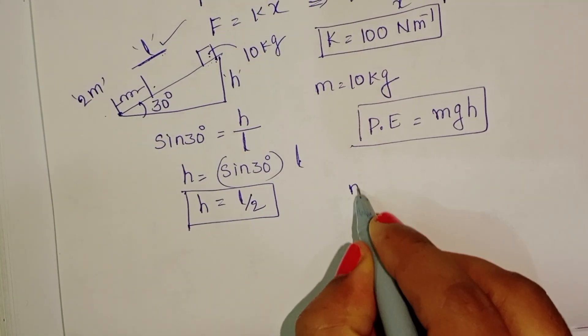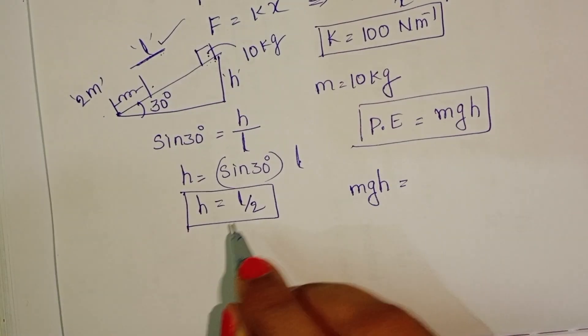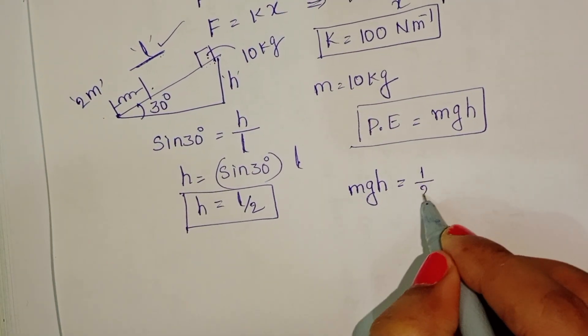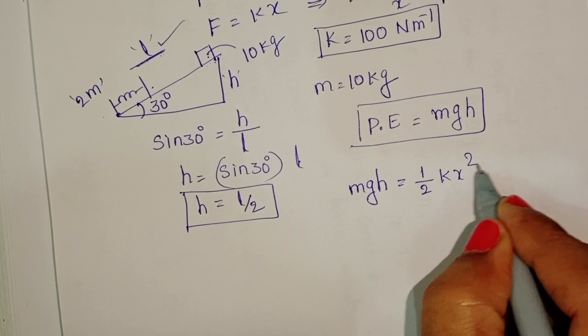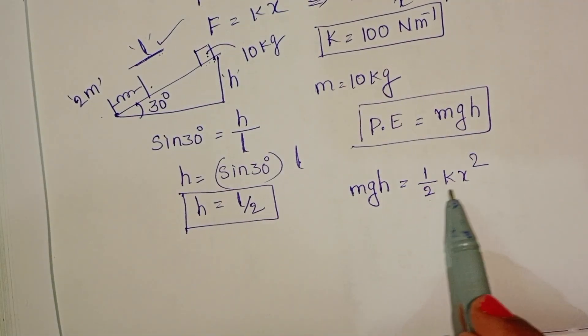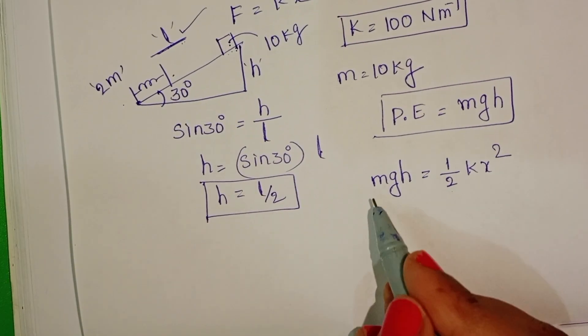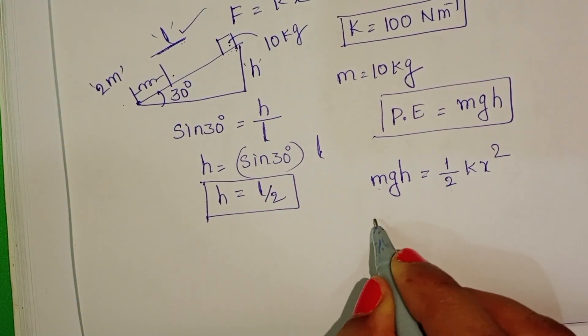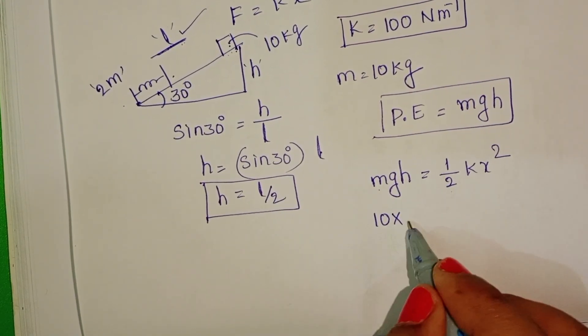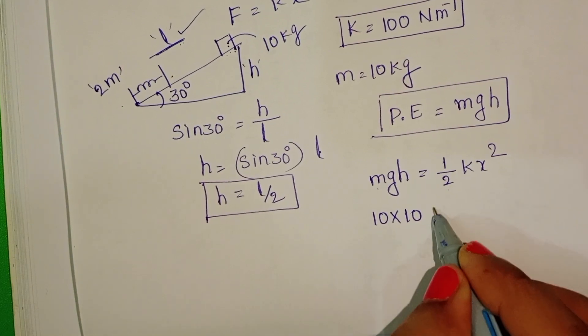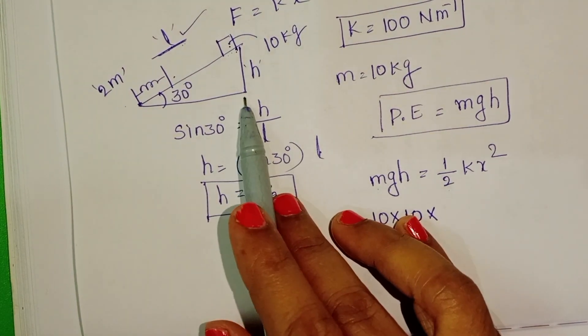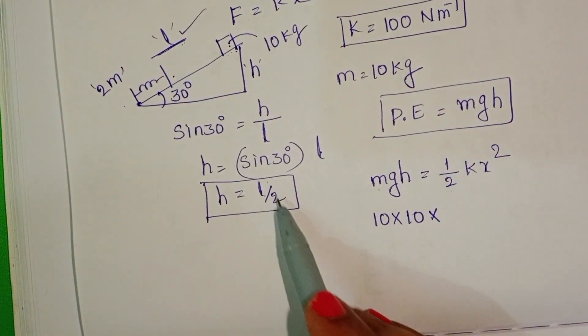The potential energy of the block is converted into energy stored in the spring. That is half kx squared. We know the mass of the block is 10 kg. And take acceleration due to gravity is 10. And height of the inclined plane equals l by 2.